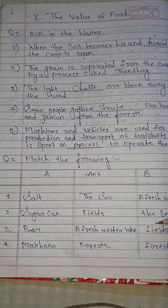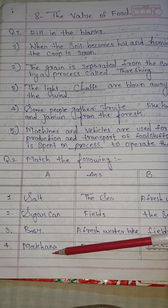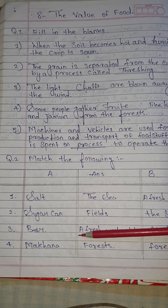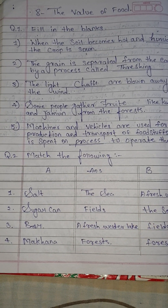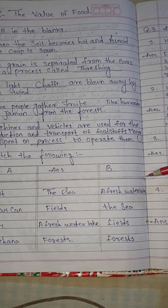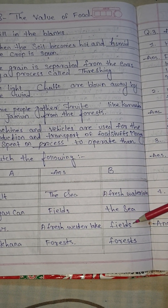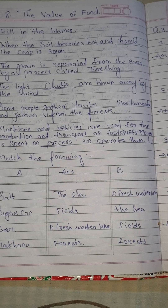Number 3: bore — a fresh water lake. Number 4: makhana — forest. Answers: a fresh water lake, the sea, fields and forest.